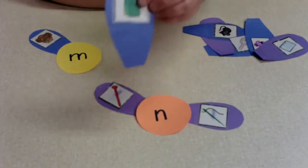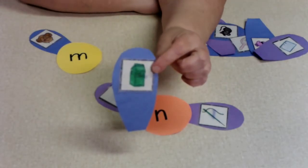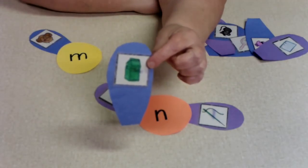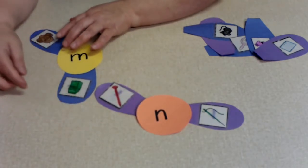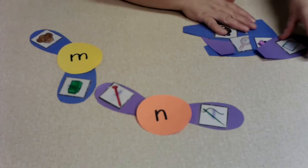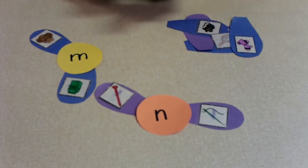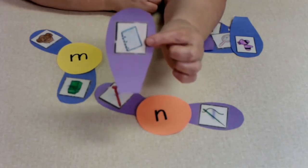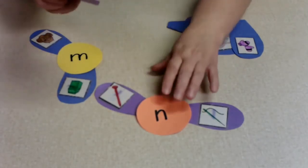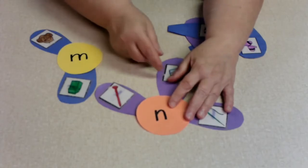Nail begins with the N sound. Here we have some milk. Milk begins with the N sound. And we've got a notebook. Notebook begins with that N sound.